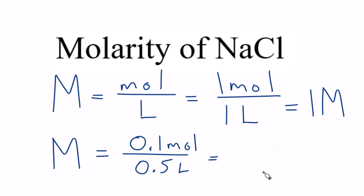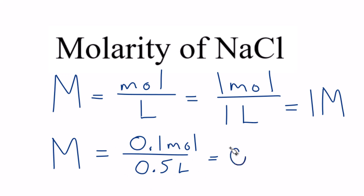We put some water in, add our 0.1 moles, dissolve that, and fill it up to the 0.5 liter or 500 milliliter mark. So our molarity here is 0.1 moles over 0.5 liters, which equals a 0.2 molar solution of NaCl.